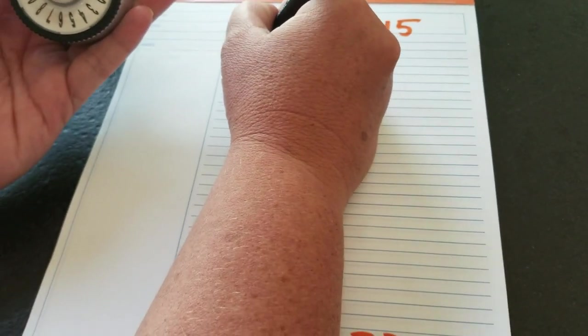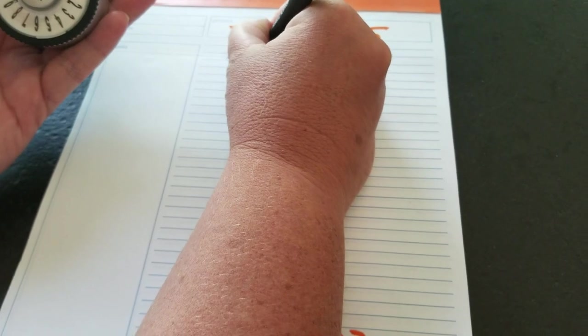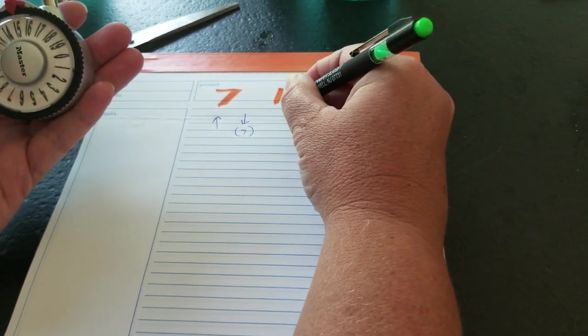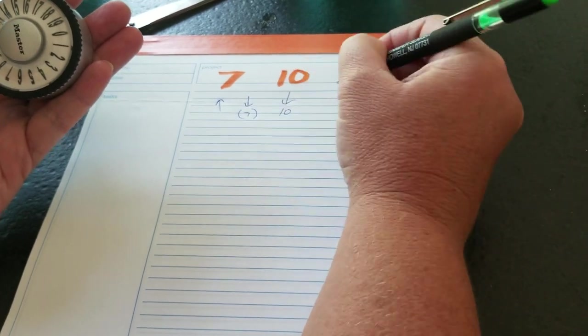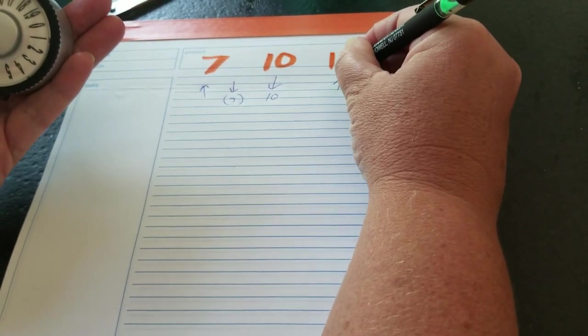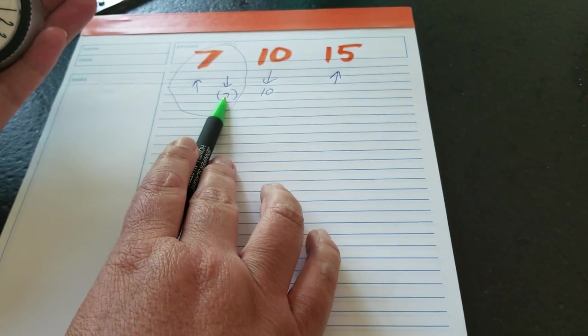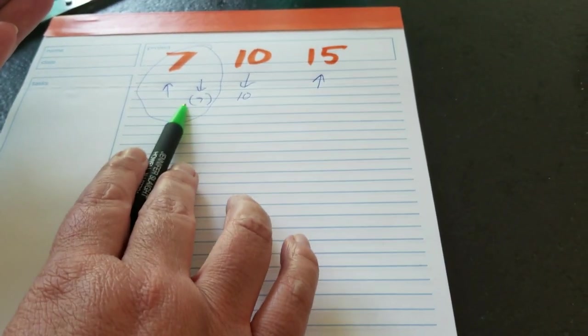We're going to go up to 7, we're going down past 7, we're going to continue down to 10, and then we're going to go up to 15. So you're going to have basically two 7s. So this helps them remember that they have to pass the first number.